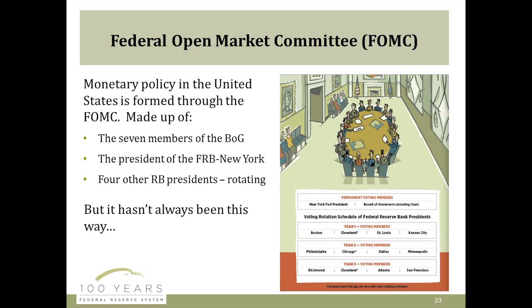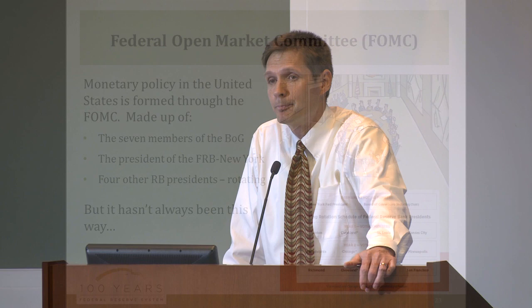The Federal Open Market Committee — the FOMC — is the body that forms the practices and policies for monetary policy in the country. It's made up of seven members of the Board of Governors — currently four — and always includes the president of the Federal Reserve Bank in New York. The remaining four votes are rotated among the Reserve Bank presidents. We're in year two right now, so Narayana Kocherlakota is one of the voting members of the FOMC. Even non-voting reserve bank presidents still show up to meetings and provide their views, but when it comes to the actual monetary policy actions, they're not voting.